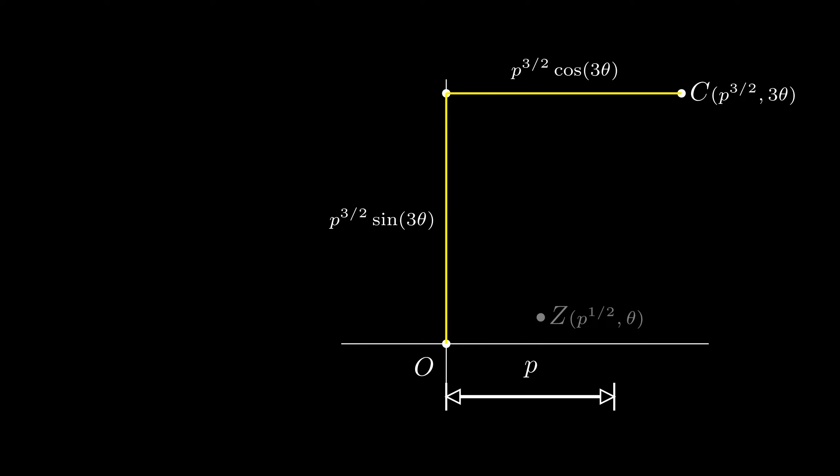Existence of the required triangle is guaranteed if the difference between the sides is strictly less than p. This is also known as triangle inequality.